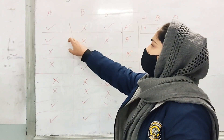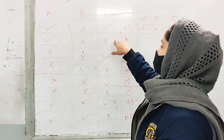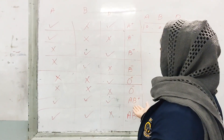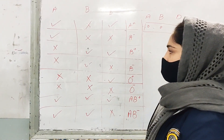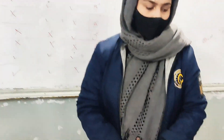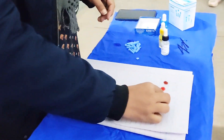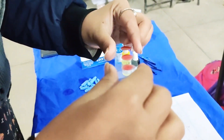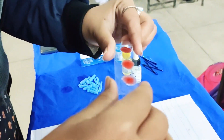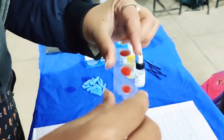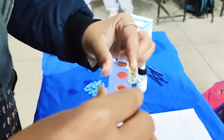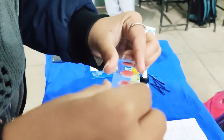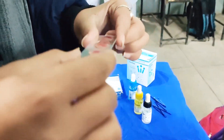If we look at A and D and there is no clumping of cells, then we will know that the blood group is negative. Let's see what the student's blood group is — is there clumping or not? We are looking at A, B, and D. We give it a few seconds so we can tell the exact blood group to the student.